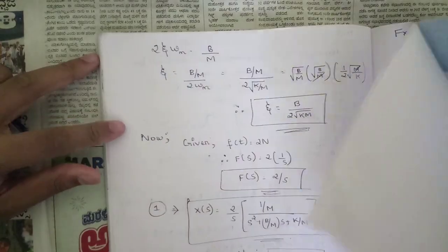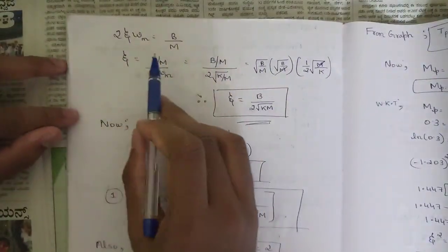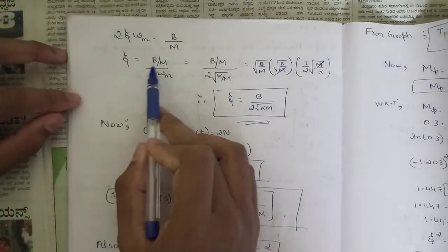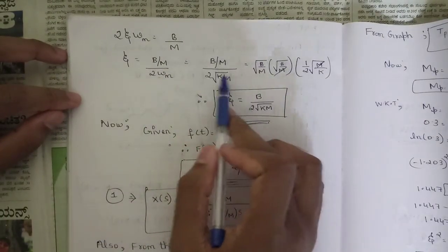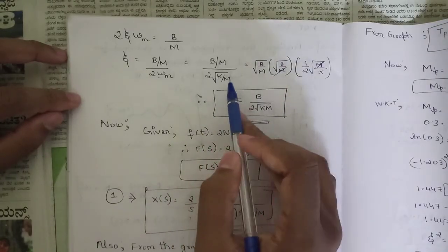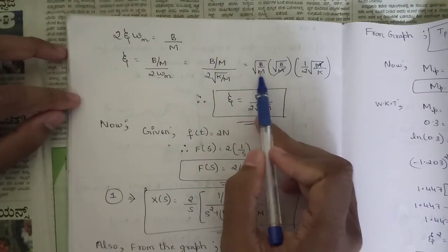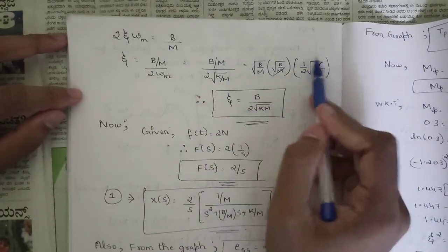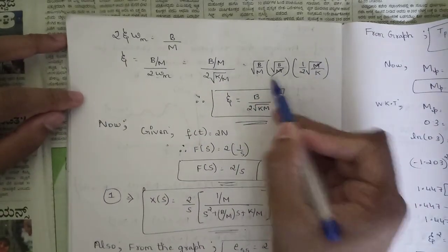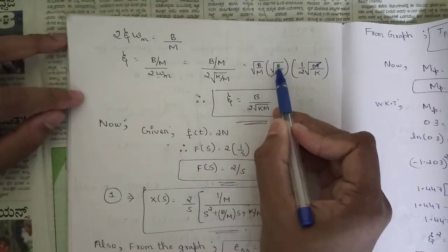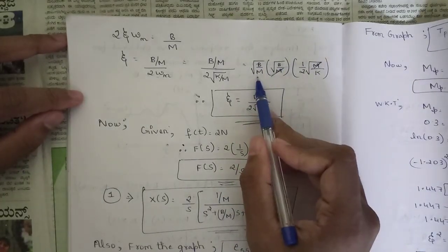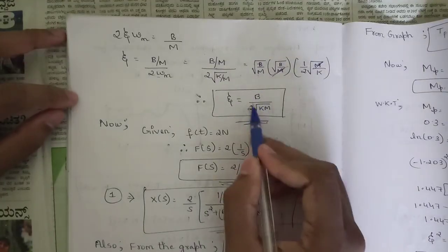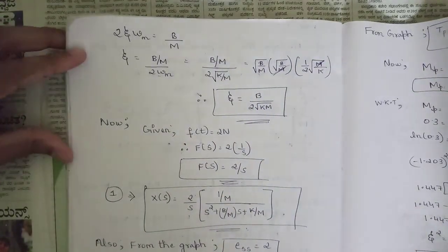For the damping ratio, comparing coefficients of s: 2ζωn = b/m, so ζ = (b/m)/(2ωn) = (b/m)/(2√(k/m)). Simplifying by rationalizing, ζ = b / (2√(km)). This is our second relation. Now we will find the values of m, b, and k one by one.